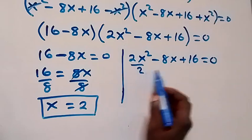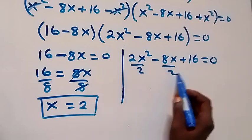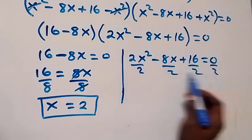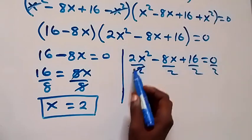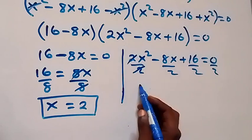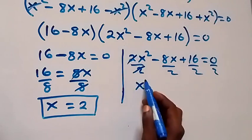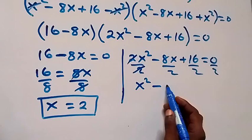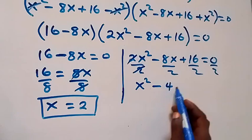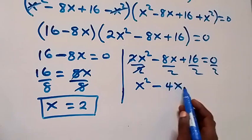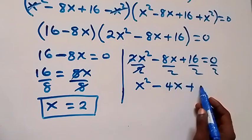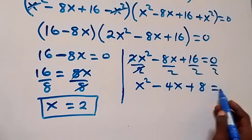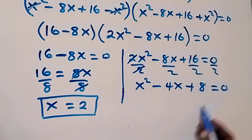From the quadratic factor 2x squared minus 8x plus 16 equals zero, we divide both sides by 2 to get x squared minus 4x plus 8 equals zero.